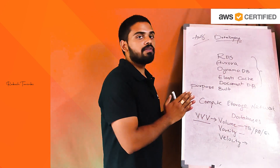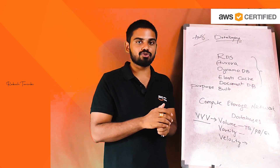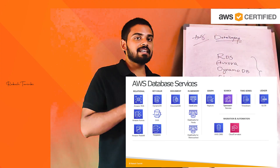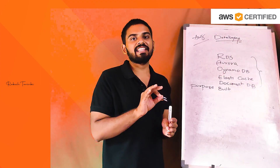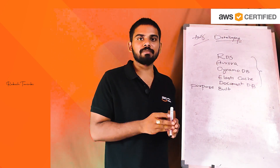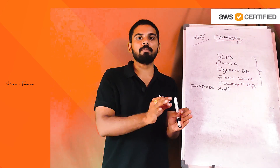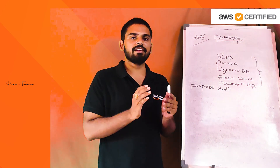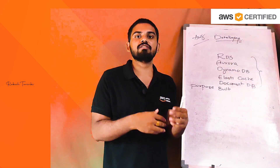I will show you a screenshot on screen. In AWS, every category of service is used for a specific purpose. When we use an application, we can have a read-heavy workload or a write-heavy workload. Heavy reads mean we read data frequently, while heavy writes mean we insert or update records multiple times.